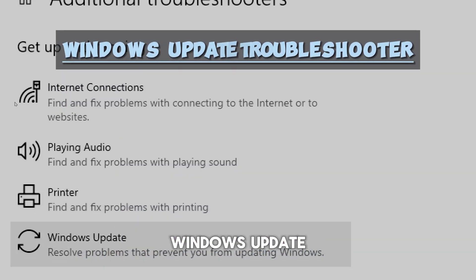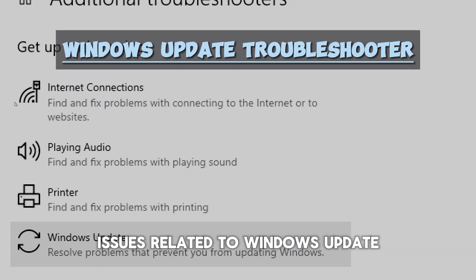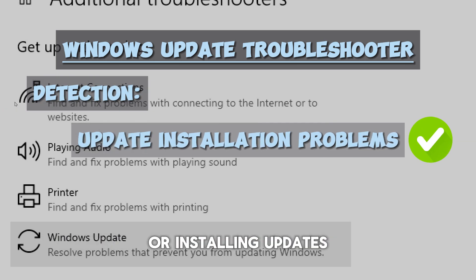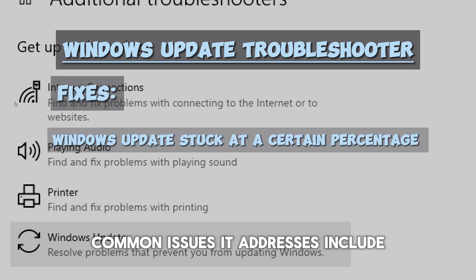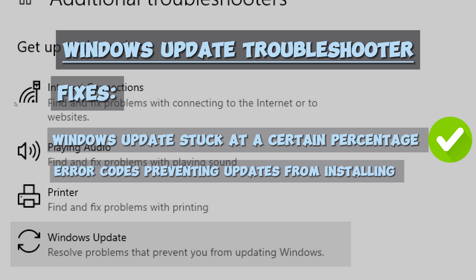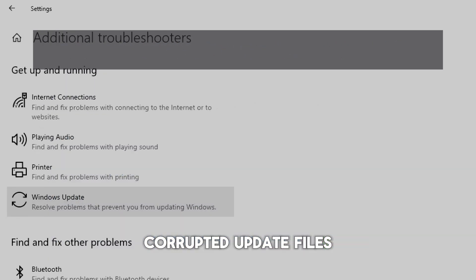The Windows Update troubleshooter is specifically designed to address issues related to Windows Update. It can detect problems preventing Windows from downloading or installing updates. Common issues it addresses include Windows Update stuck at a certain percentage, error codes preventing updates from installing, Windows Update service not running, and corrupted update files.